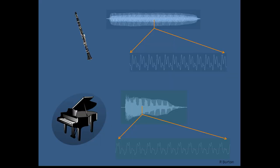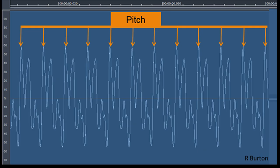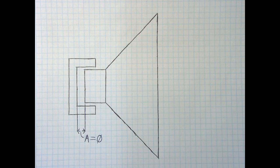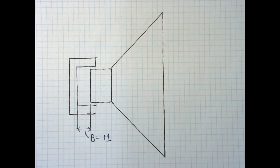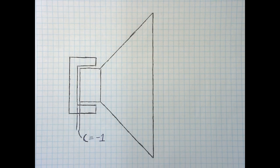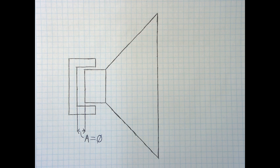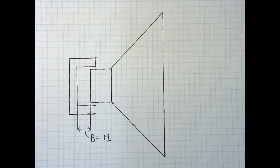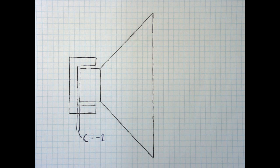We need to sample at twice the frequency of the highest pitch we want to reproduce. The big idea here is that we can reproduce sound by recording one number — the position of the speaker — which is a signed number describing how far the speaker cone is moving in or out from its resting position, that is plus or minus the resting position, which we're calling zero.